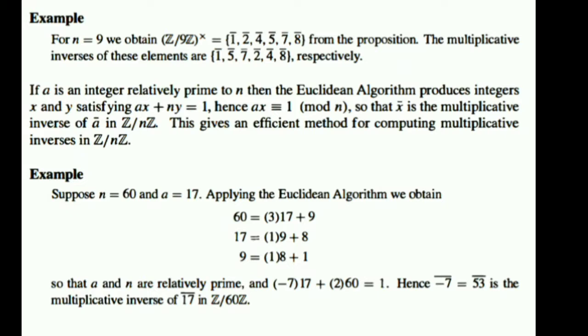Now whenever we are trying to find out the multiplicative inverse in Z/nZ cross, we will take the help of the Euclidean algorithm. Specifically, whenever a is relatively prime to n, then by the Euclidean algorithm there exists two integers x and y for which ax plus ny equals 1. Therefore ax is congruent to 1 mod n, so class x will be the multiplicative inverse of class a in Z/nZ.